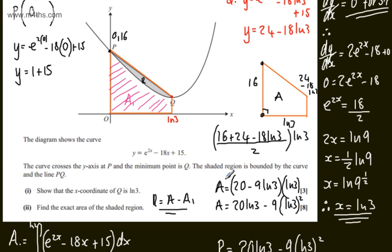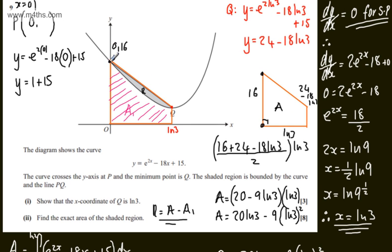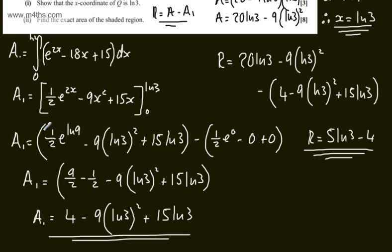That is one way of doing it. An alternative is to find the equation of line PQ, subtract the function from it, and integrate between the limits. It might be quicker to find the equation of the line, subtract the original function, integrate that, and evaluate it between 0 and ln(3). You will be awarded maximum marks of 8 either way.